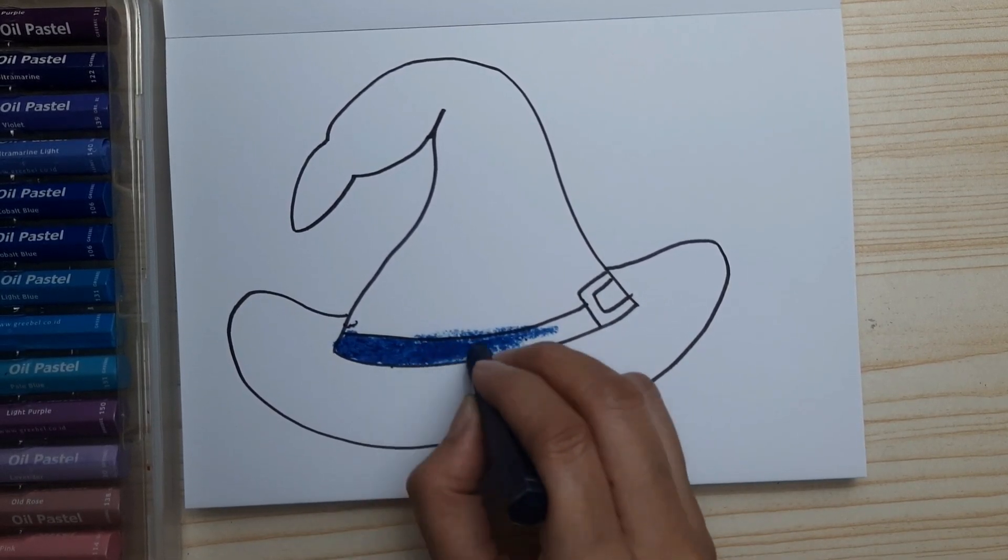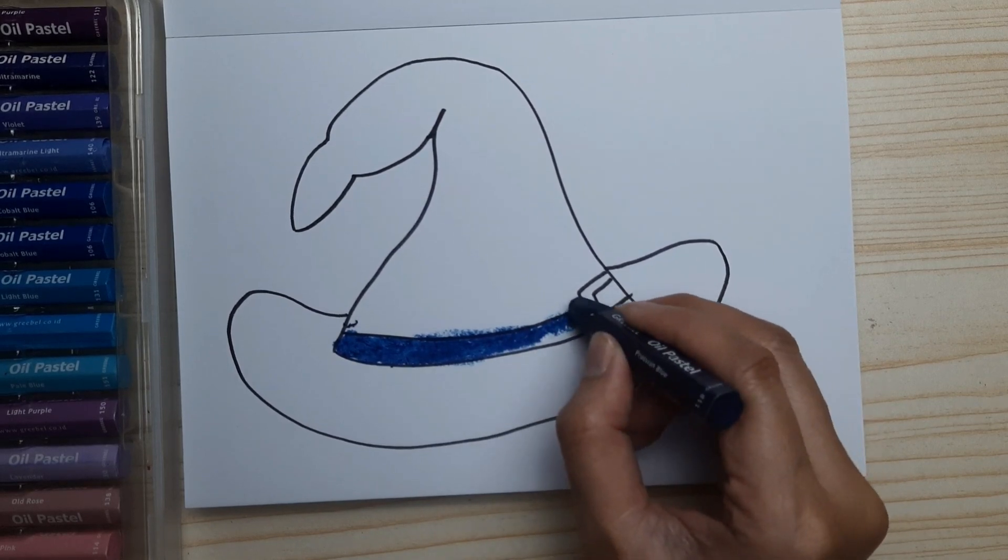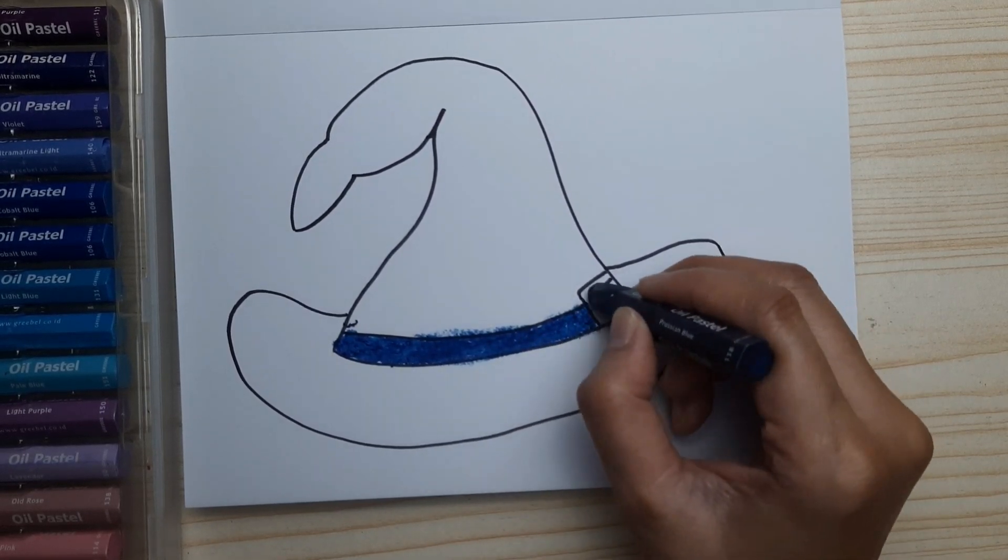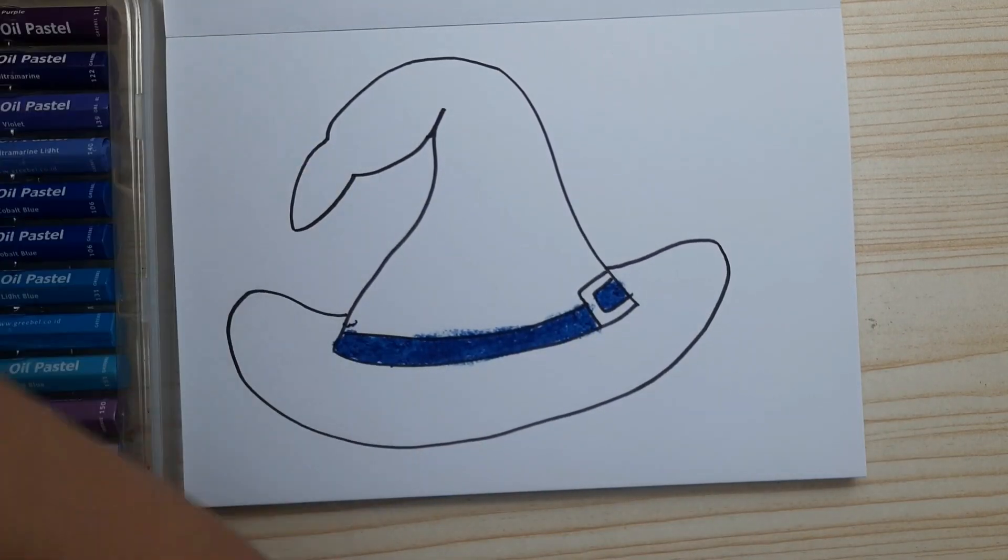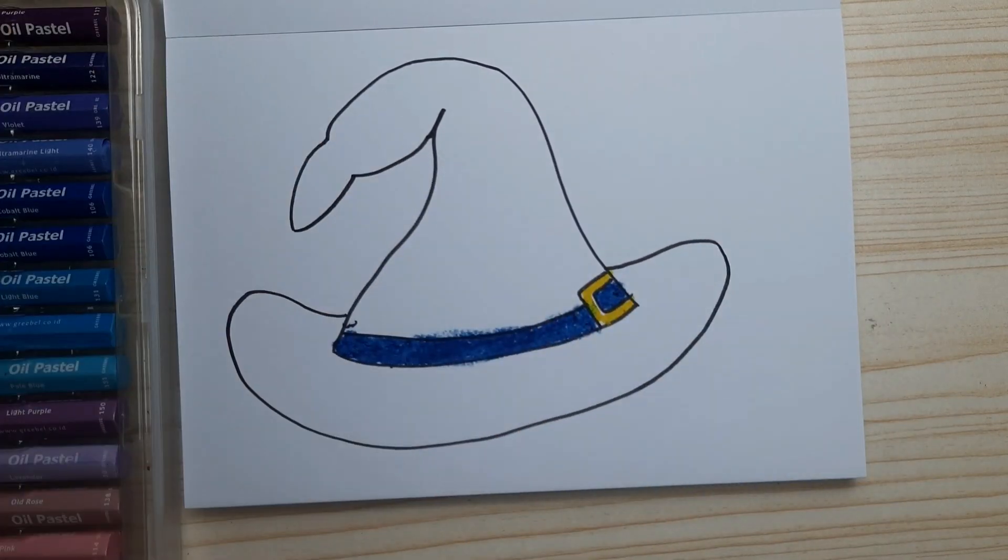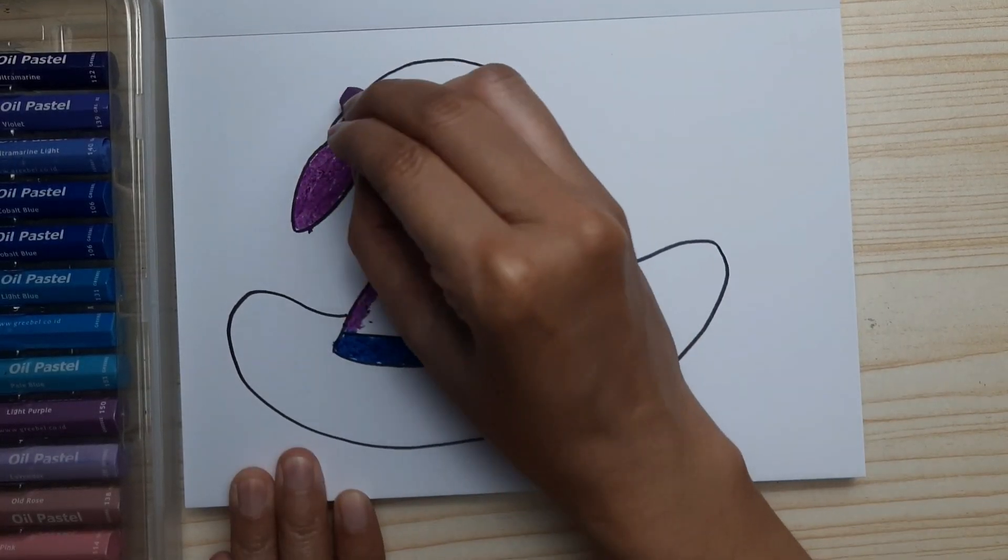...it dark blue, actually it's the darkest shade of blue. The buckle is yellow or orange, and the rest of...